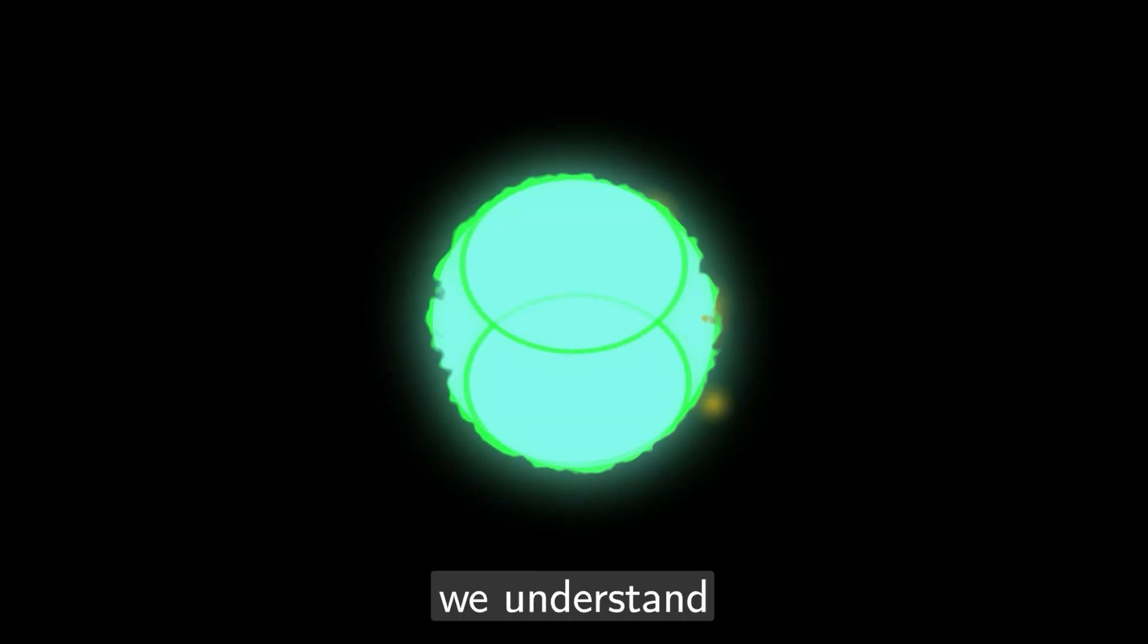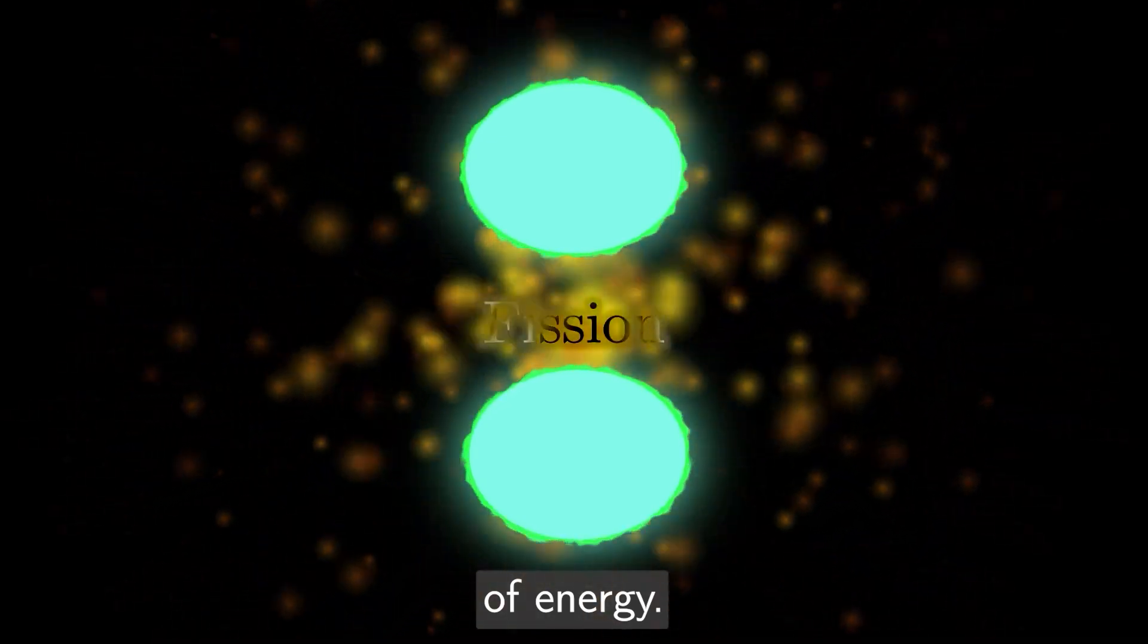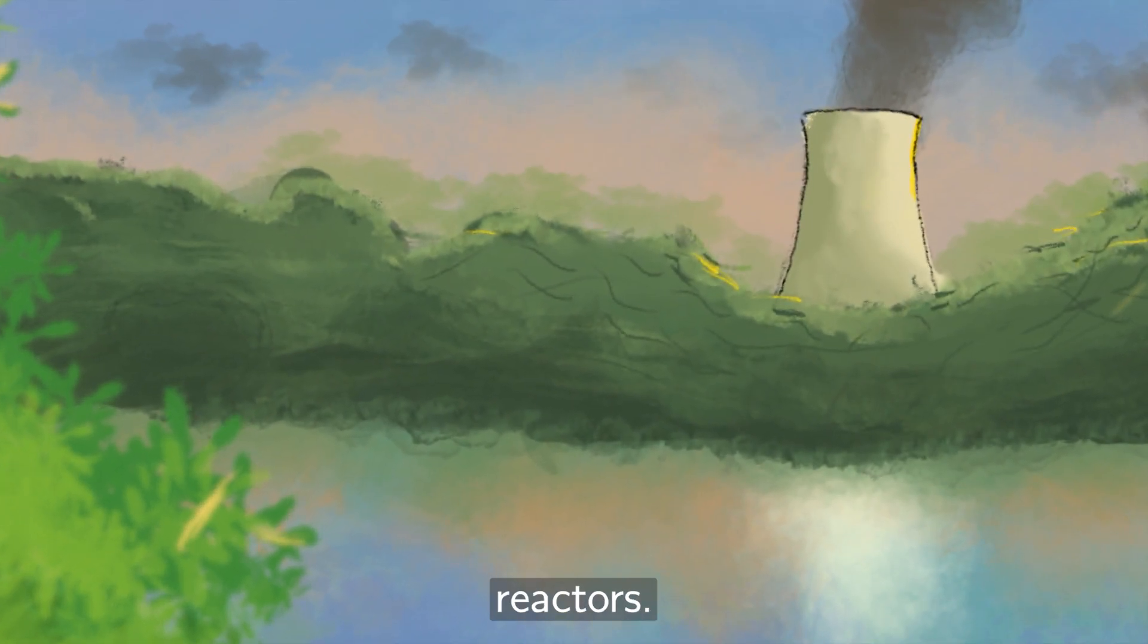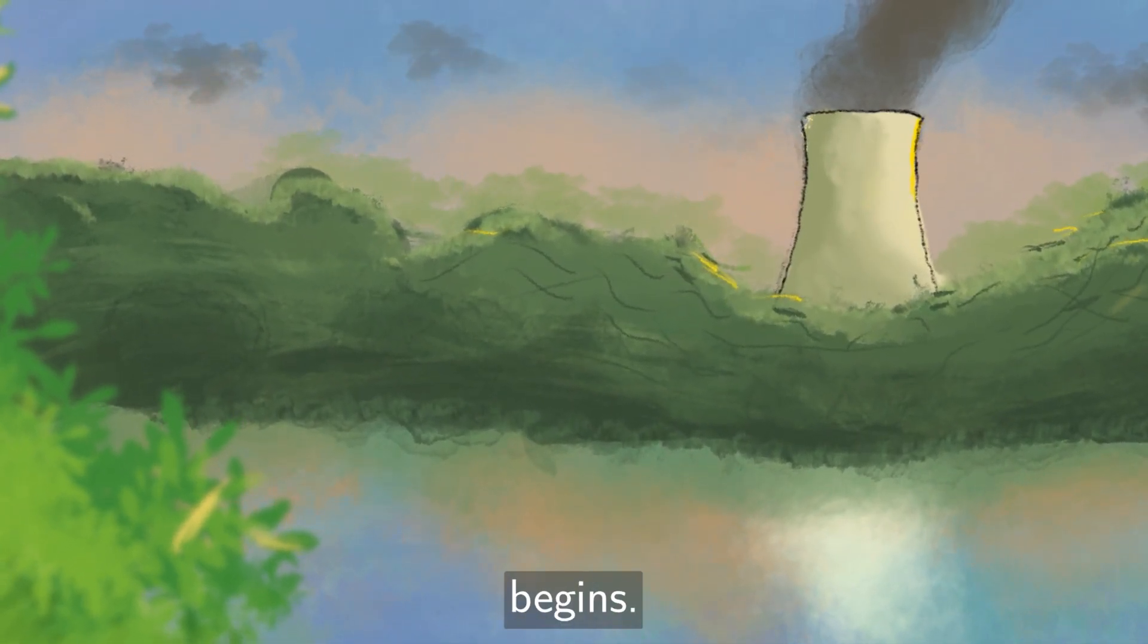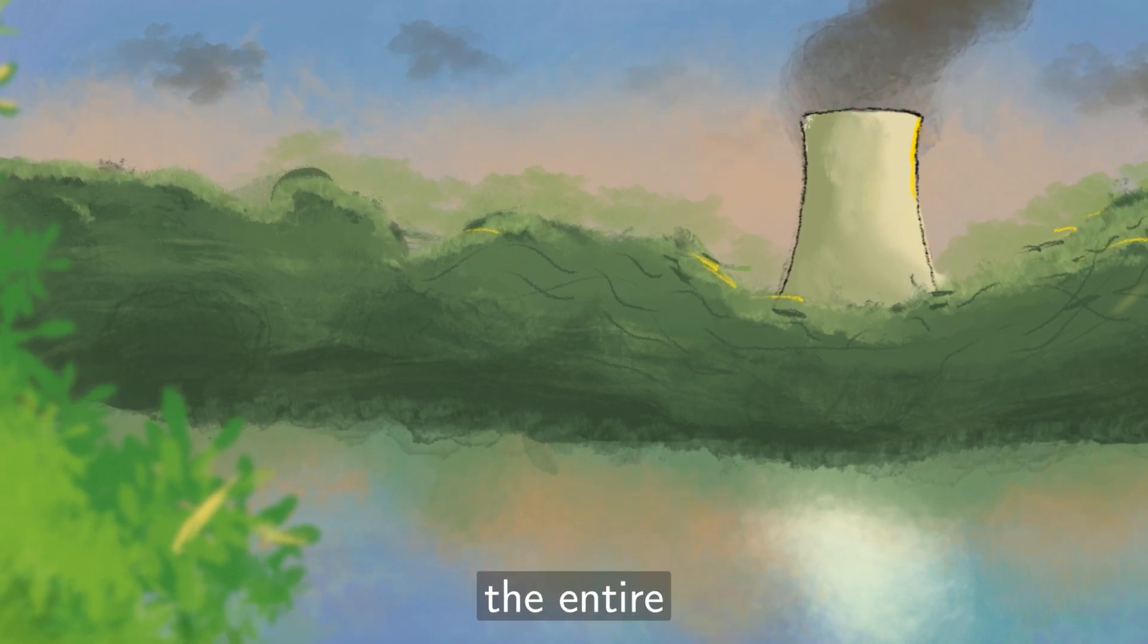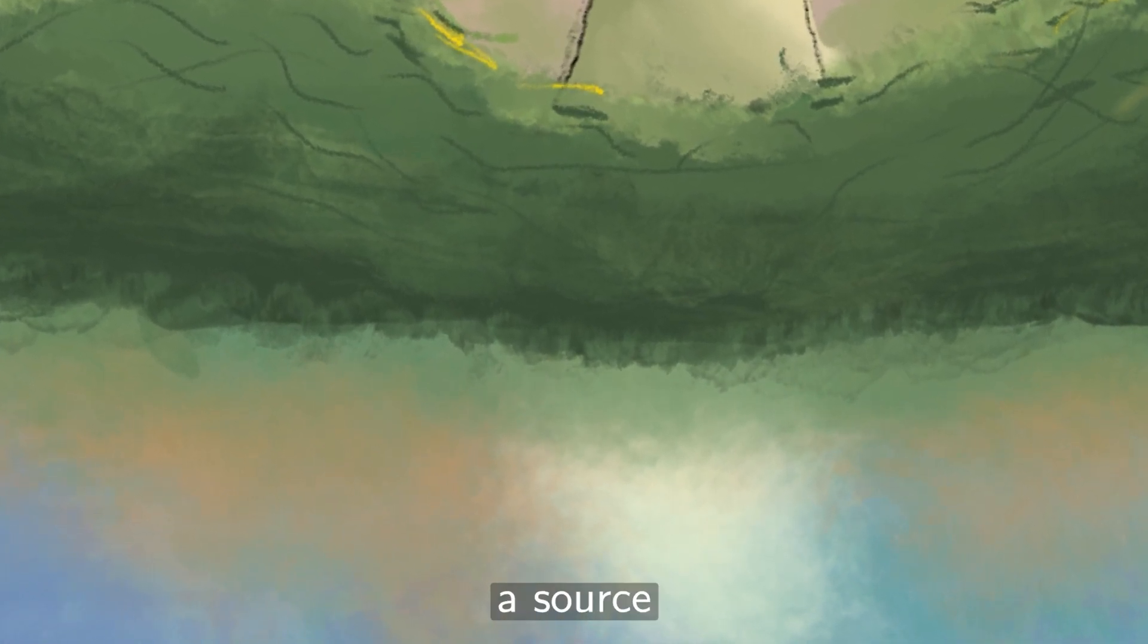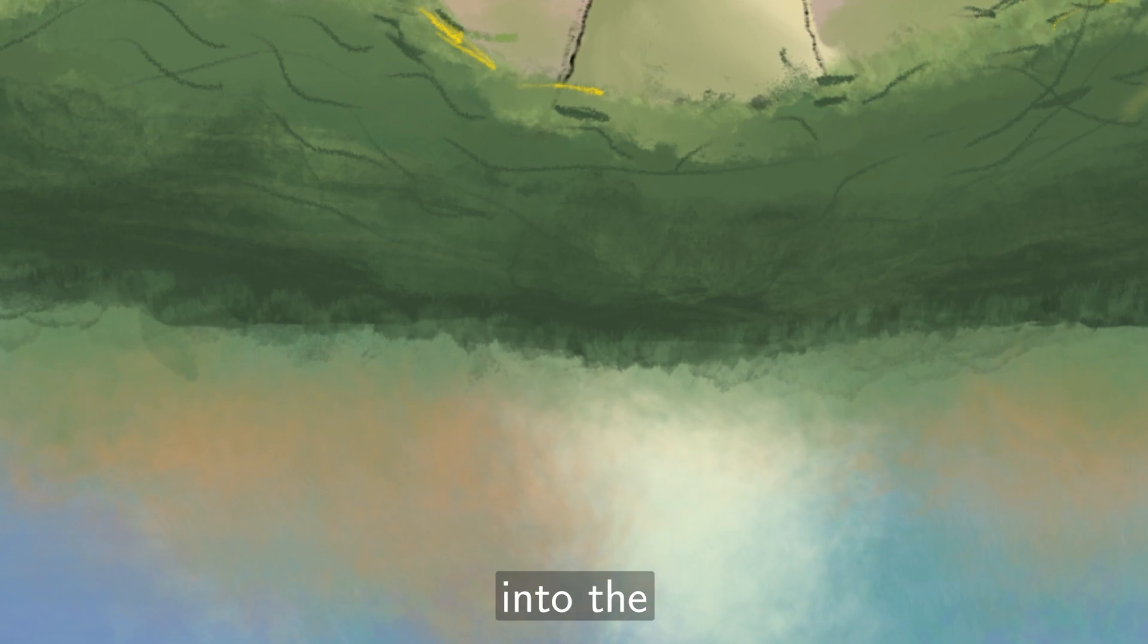Okay, now we understand nuclear fission and how it can release tremendous amounts of energy. So now let's talk about what this video is all about, nuclear reactors. We first need to understand where everything begins. Well, for a nuclear reactor, the entire process begins with water. The entire reactor should be located near a source of water, like a river or ocean, where water will be pumped into the reactor.